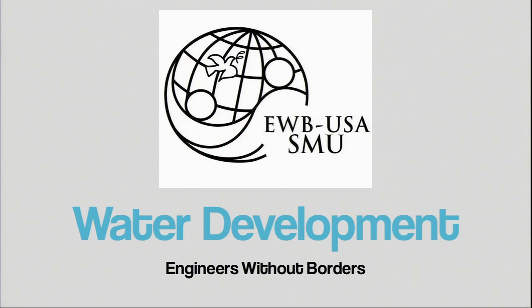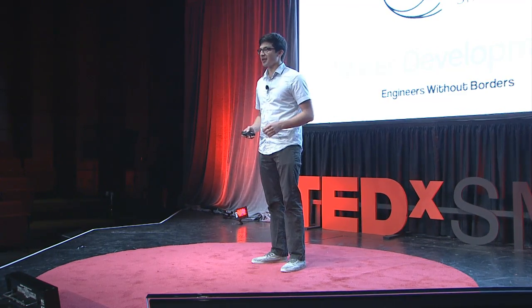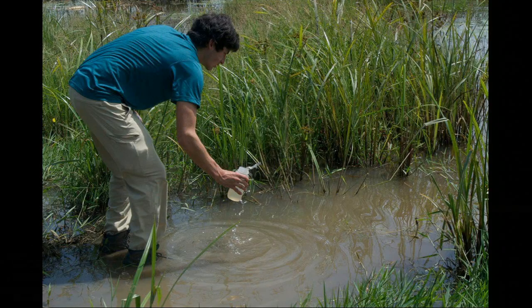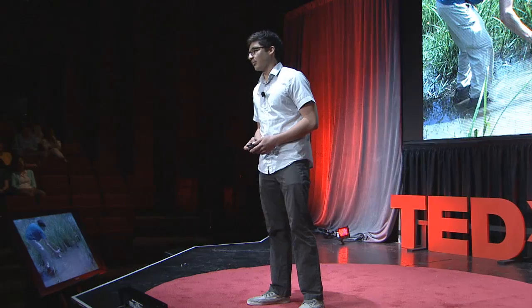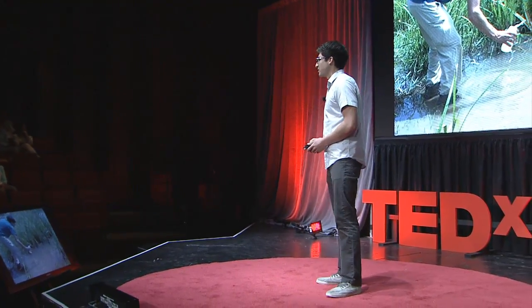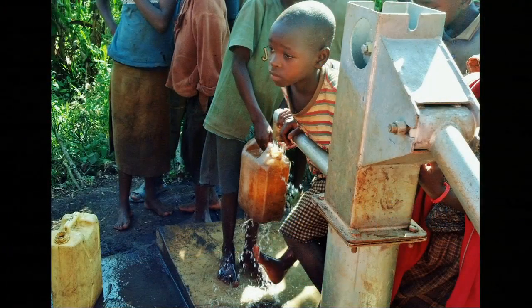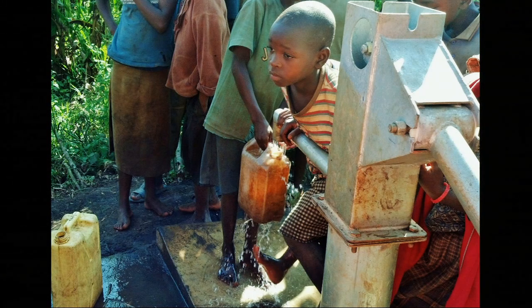That's what led me to study environmental engineering and join Engineers Without Borders — to be able to share that experience with other people. We currently have a project in Rwanda. This child here is about to fill up his 20-liter jerry can and consume it. We tested the water and it had counts of E. coli and cholera bacteria. The last thing on his mind might be how he can reach self-actualization or fully creatively express himself. This hand pump actually had counts of uranium in the water — naturally occurring uranium.